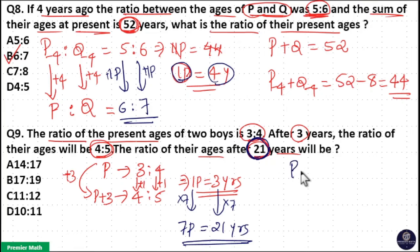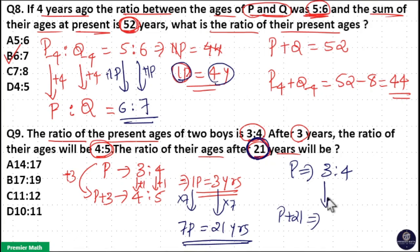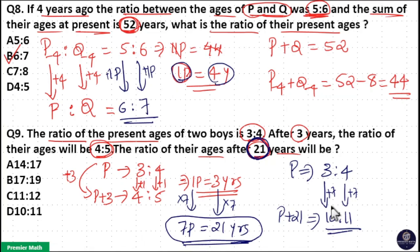The present age ratio is 3 is to 4. After 21 years, which is 7 parts, we add 7 parts to each: 3 plus 7 is 10 parts, and 4 plus 7 is 11 parts. So the ratio after 21 years will be 10 is to 11. Option D is your answer.